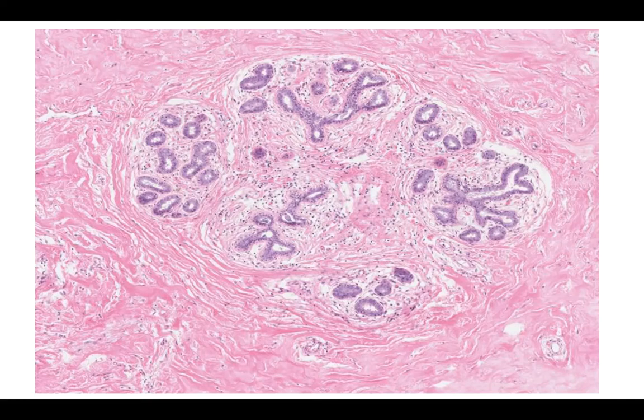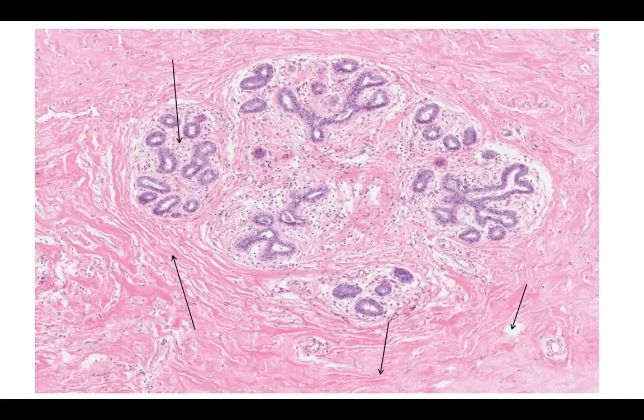In examining the stroma, we can divide it into the interlobular stroma surrounding the terminal duct lobular units and large ducts, and the intralobular stroma, which surrounds the acini within the TDLU. The interlobular stroma consists primarily of fibrous connective tissue, fibroblasts, myofibroblasts, and adipose tissue, the latter representing the majority of the adult breast volume, as we can see as these round white spaces.